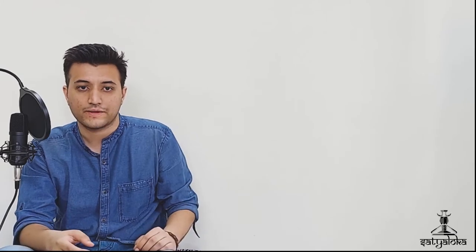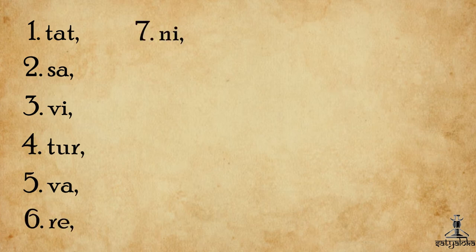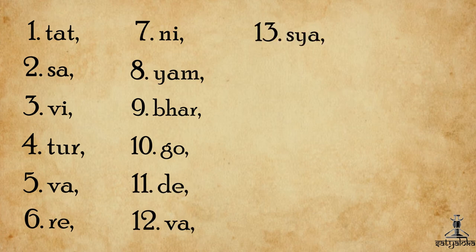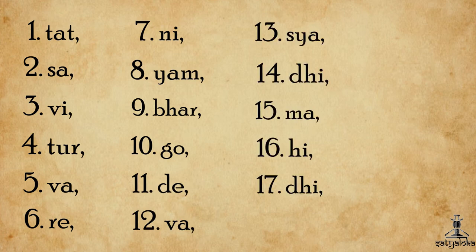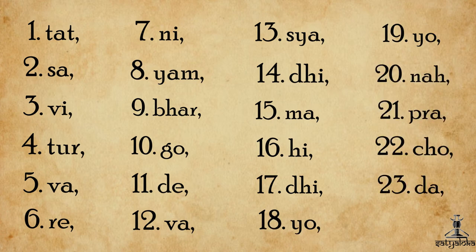So let's try to count the 24 syllables of the Gayatri Mantra: Tat, Sa, Vi, Tur, Va, Re, Ni, Yam, Bhar, Go, De, Va, Sya, Dhi, Ma, Hi, Dhi, Yo, Yo, Na, Pra, Cho, Da, Ya.